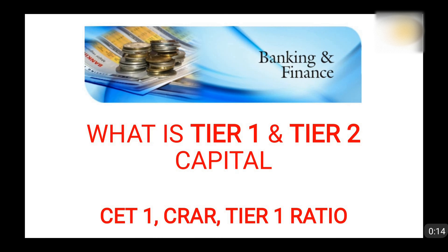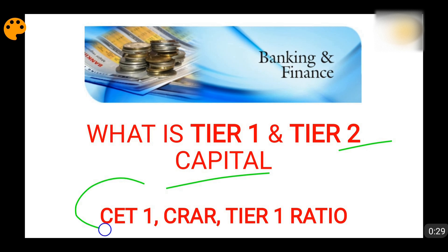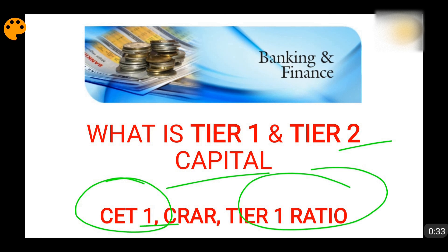Whenever we talk about the Basel 3 norms, the prompt corrective action framework of the RBI, words like tier 1 capital of the banks and tier 2 capital are regularly heard. We also hear about common equity tier 1 ratio, the tier 1 ratio. Additionally, one thing we hear about is CRAR — capital to risk weighted assets ratio — also known as capital adequacy ratio. Capital adequacy ratio and capital to risk weighted assets ratio are basically the same thing.